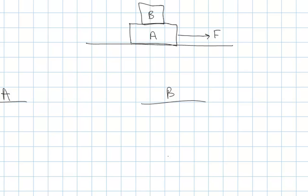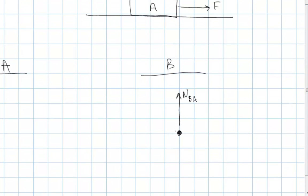I'm going to start with block B because that's the easiest. My dot represents block B, and the first thing I like to think about is what is touching block B? Block A is touching block B. A surface can interact with something in two ways: through a normal force on B from A, and through a friction force. The normal force is perpendicular to the surface, and the friction force is always parallel to the surface. If block B is accelerating to the right, then the friction force has to be pointing to the right — that's what is causing the acceleration. That's static friction on B from A.